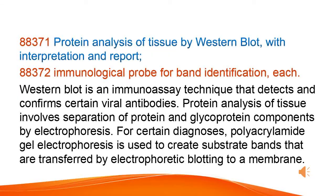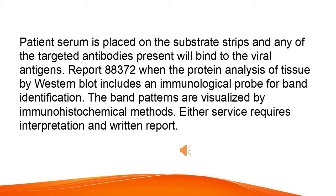Protein analysis of tissue by Western Blot with interpretation and report. Immunological probe for band identification. Each Western Blot is an immunoassay technique that detects and confirms certain viral antibodies. Protein analysis of tissue involves separation of protein and glycoprotein components by electrophoresis. For certain diagnoses, polyacrylamide gel electrophoresis is used to create substrate bands that are transferred by electrophoretic blotting to a membrane. Patient serum is placed on the substrate strips and any of the targeted antibodies present will bind to the viral antigens. Report 88372 when the protein analysis of tissue by Western Blot includes an immunological probe for band identification. The band patterns are visualized by immunohistochemical methods. Either service requires interpretation and written report.